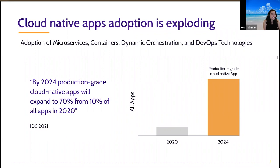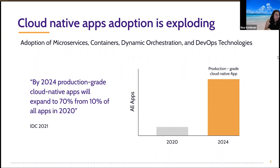Before we deep dive into the different challenges, let's look at some numbers and graphs. If we thought cloud native was already a huge deal, it's going to be even bigger in the future. By 2024, production-grade cloud native applications will expand to 70% from just 10% of all apps in 2020, which is a major shift. This is why we want to learn how those challenges will affect us and how to overcome or avoid them.